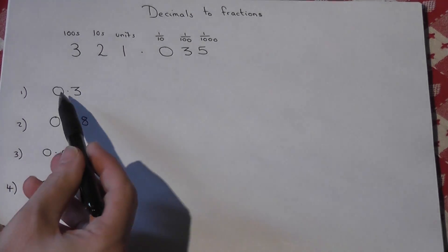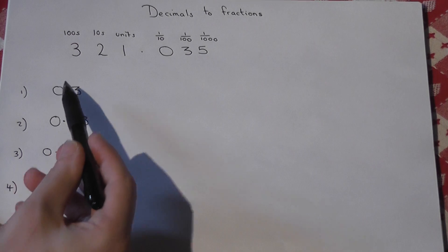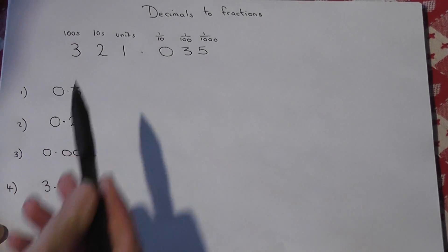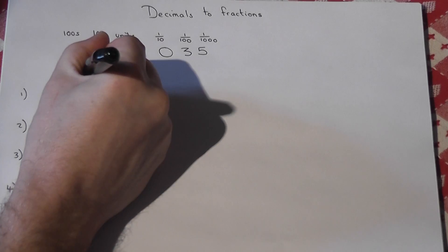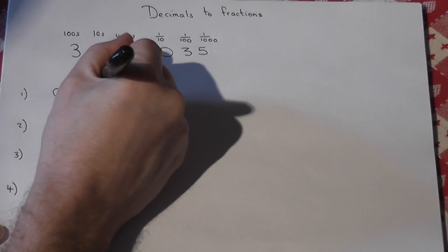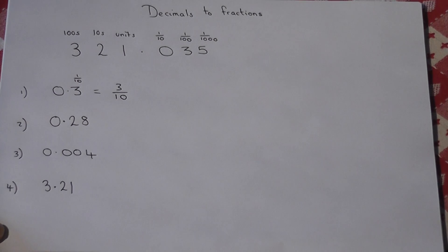So if you're given a number, you can work out what column the decimal actually refers to. So 0.3 has got 3 in the tenths column. So that's the tenths column. So 0.3 must be 3 tenths, because there's a 3 in the tenths column.